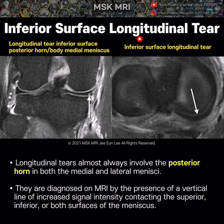Longitudinal tears are diagnosed on MRI by the presence of a vertical high signal intensity line, contacting the superior, inferior, or both surfaces of the meniscus.